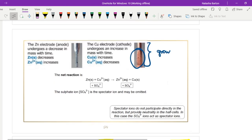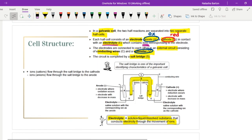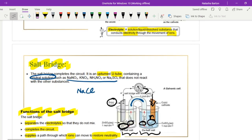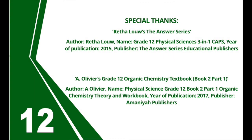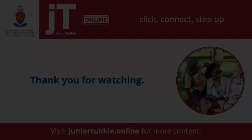That is basically how a galvanic cell works. We can be given any type of galvanic cell, but this zinc-copper example covers the key principles. Make sure you familiarize yourself with the salt bridge and its functions — there is a lot to memorize here. In the next video we are going to look at cell notation: how to write out the cell notation for galvanic cells.